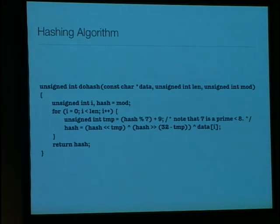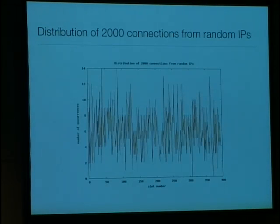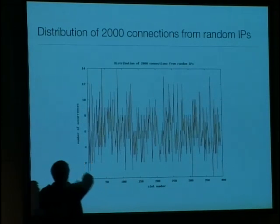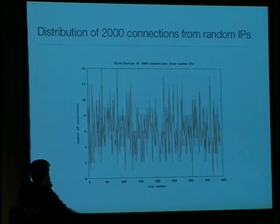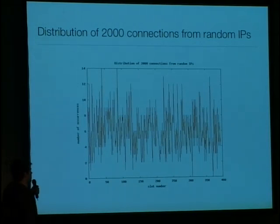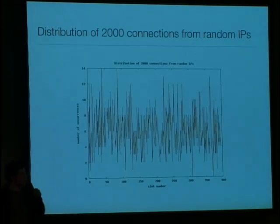The hashing algorithm is quite simple — the code runs really fast and it's good enough for what we need. We know it's good enough because we did a few simulations. On the graph you can see the slots on one axis and the number of occurrences for a certain slot on the other. I simply generated 2,000 random IPs, hashed them with the same random value, computed the slot number, and that's how it distributes. Looks pretty good.